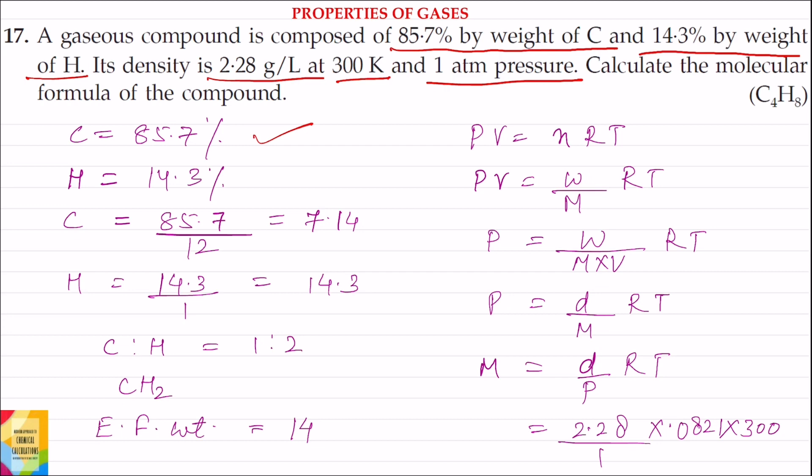Carbon's percentage is given and hydrogen's percentage is given. So, percentage of carbon divided by atomic weight of carbon gives us 7.14, and percentage of hydrogen divided by atomic weight of hydrogen gives us 14.3. Dividing both of these by 7.14, we get the simplest ratio of carbon and hydrogen, that is 1 is to 2, and the empirical formula will be CH2.